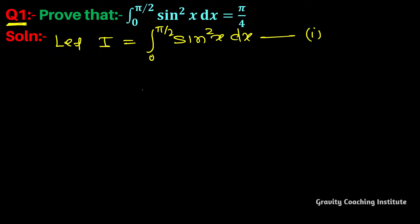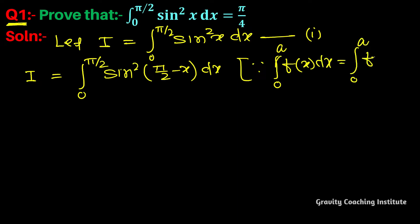Suppose this is equation first. And I equals integral 0 to pi by 2 sin square (pi by 2 minus x) dx. Here we have used the property: integral 0 to a f(x) dx equals integral 0 to a f(a minus x) dx. This simplifies to cos square x dx. Suppose this is equation second.